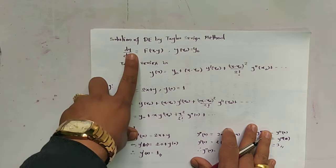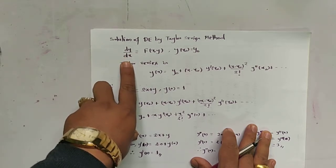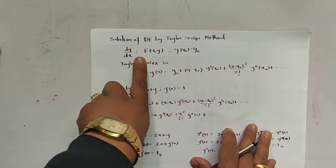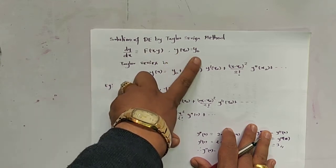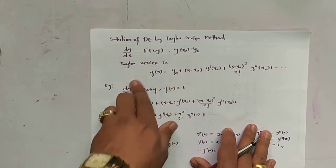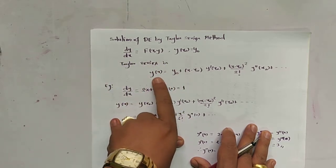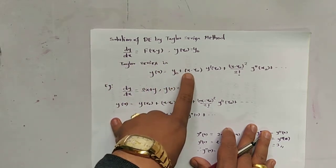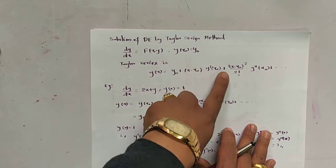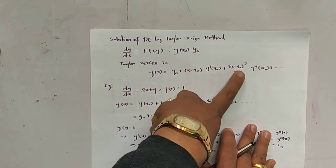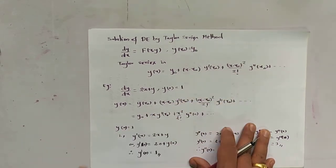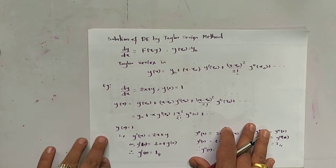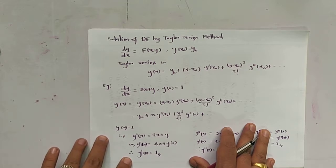Given that dy/dx, or the derivative of y with respect to x, is equal to f(x, y), where y(x₀) equals y₀. The Taylor series can be written as: y(x) = y₀ + (x − x₀)y'(x₀) + (x − x₀)²/2! · y''(x₀) + (x − x₀)³/3! · y'''(x₀) + ···